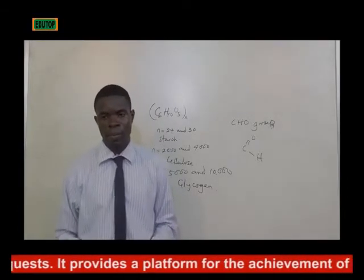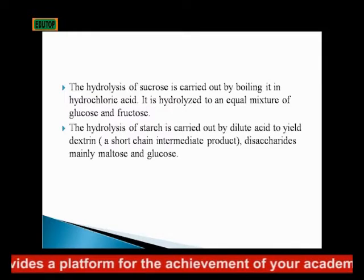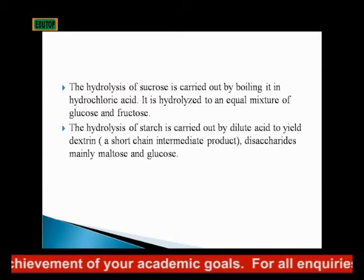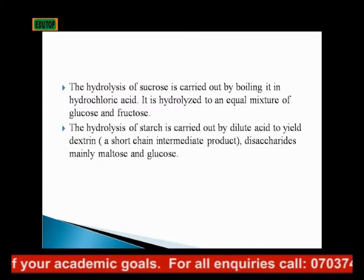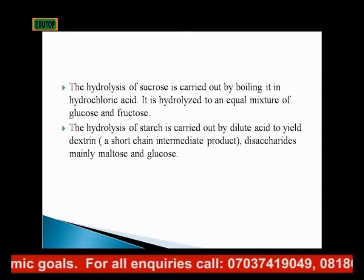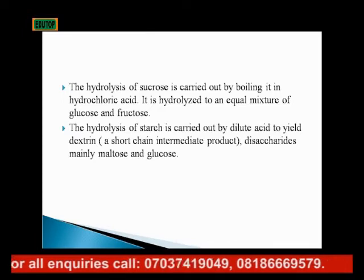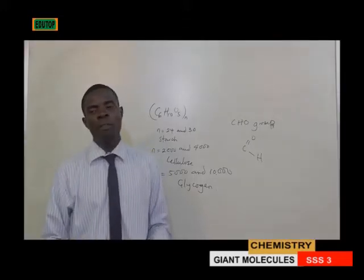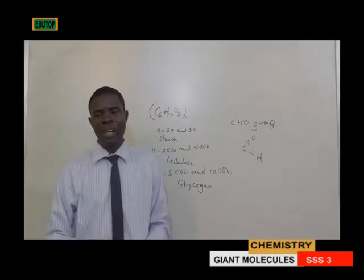The hydrolysis of starch is carried out by dilute acid to yield dextrin. Dextrin is a short-chain intermediate product — intermediate in the sense that it is not the final product. After further action on it, it gives the final product, which is a disaccharide, mainly maltose and glucose.